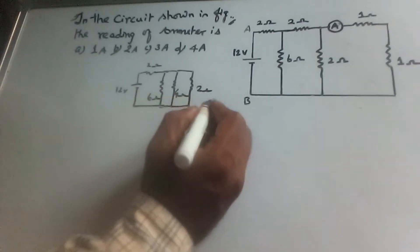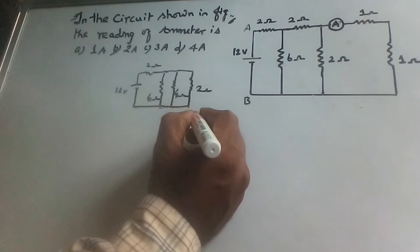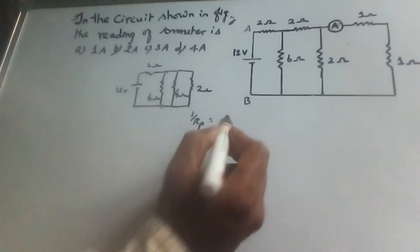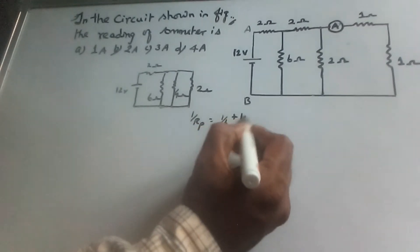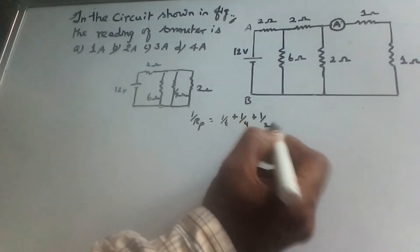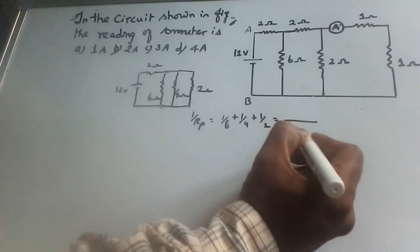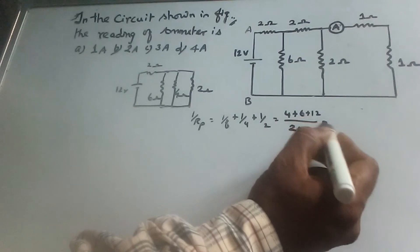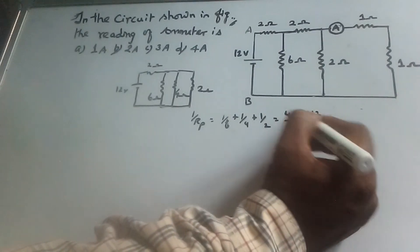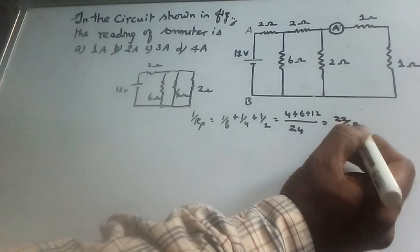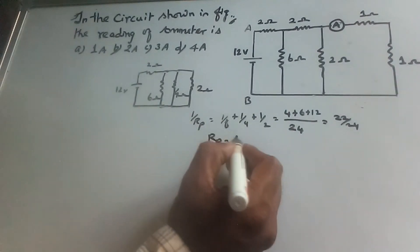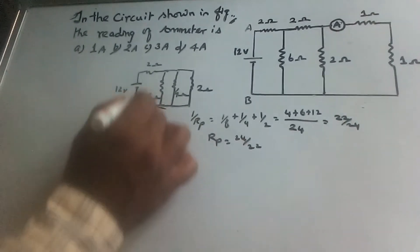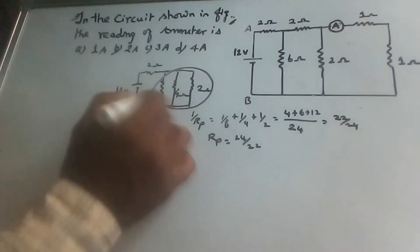These three resistors are in parallel. Hence 1 by Rp equals 1 by R1 plus 1 by R2 plus 1 by R3, so 1 by 6 plus 1 by 4 plus 1 by R2. Taking LCM as 24, we get 4 plus 6 plus 12 equal to 22 over 24.